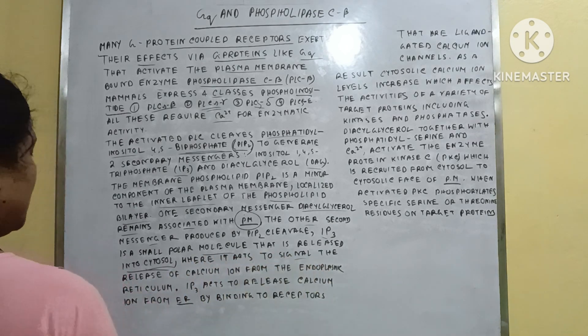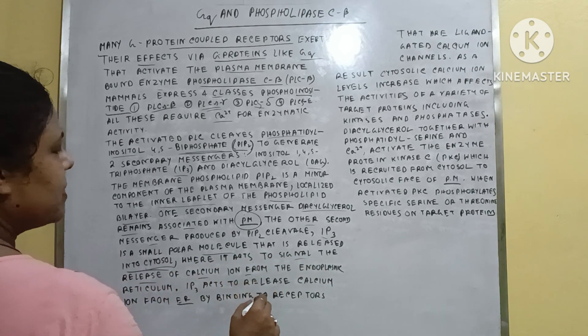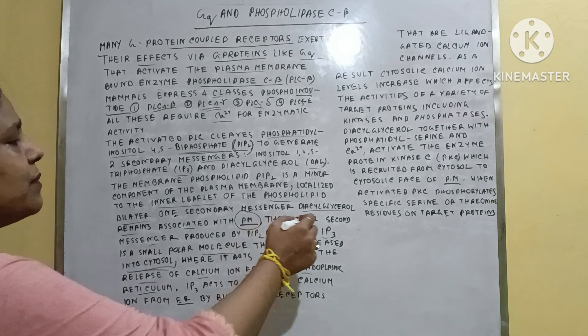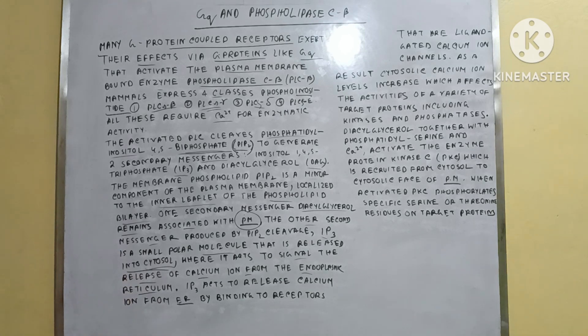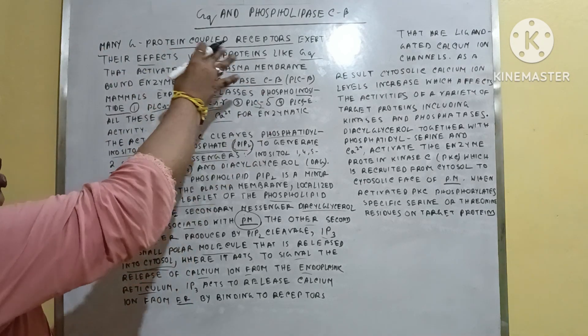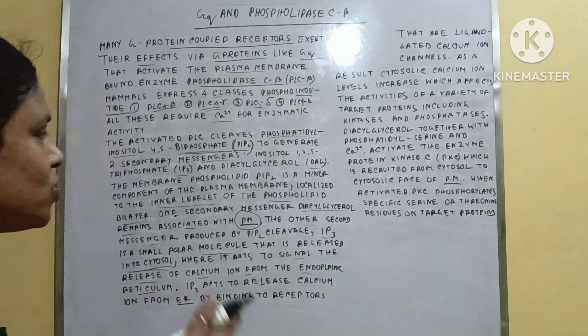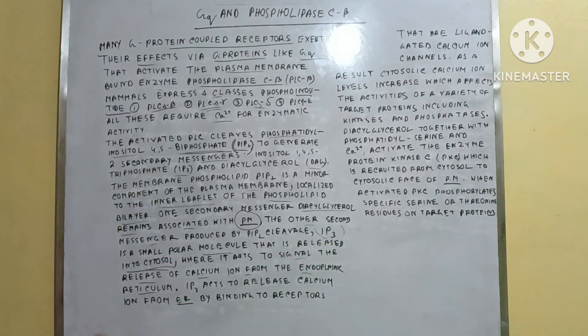IP3 acts to signal the release of calcium ion from the endoplasmic reticulum. The main function of IP3 is that it creates a signal for calcium ion release. Here we already know that in the complex formation and activation of Phospholipase C beta, calcium has an important role. IP3's role is that it creates or produces a signal when calcium ion is present in the cytosol, released from the endoplasmic reticulum.